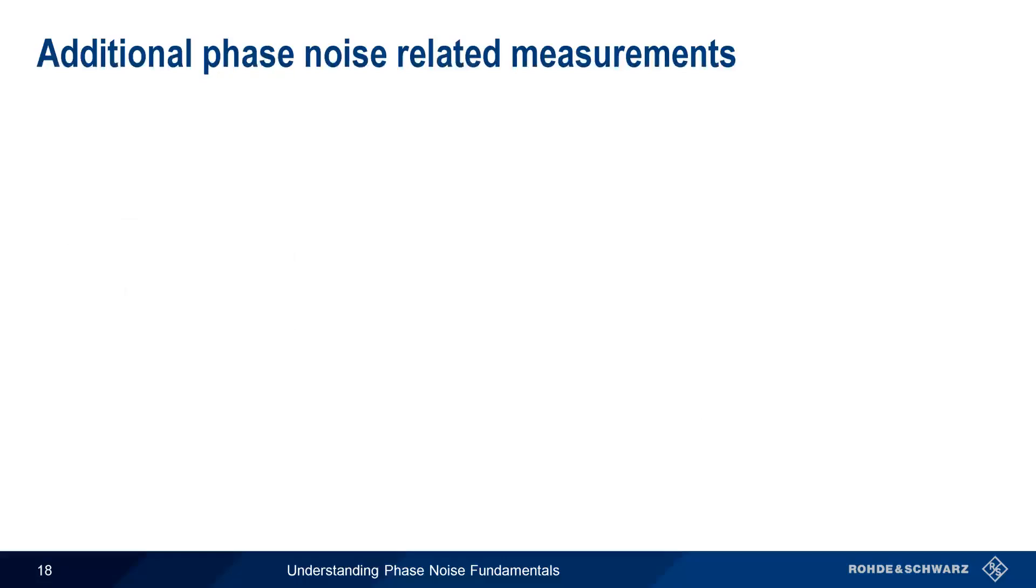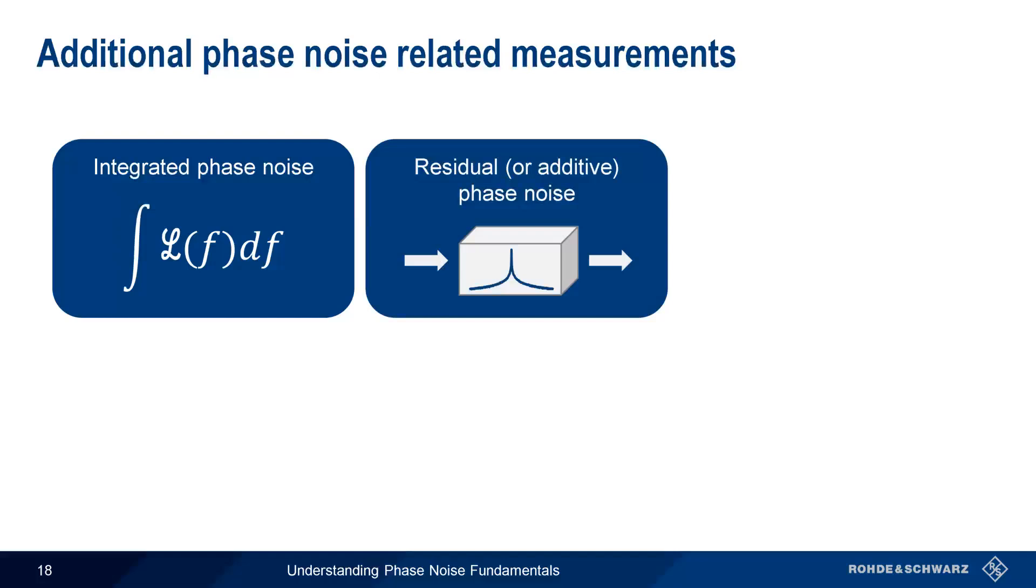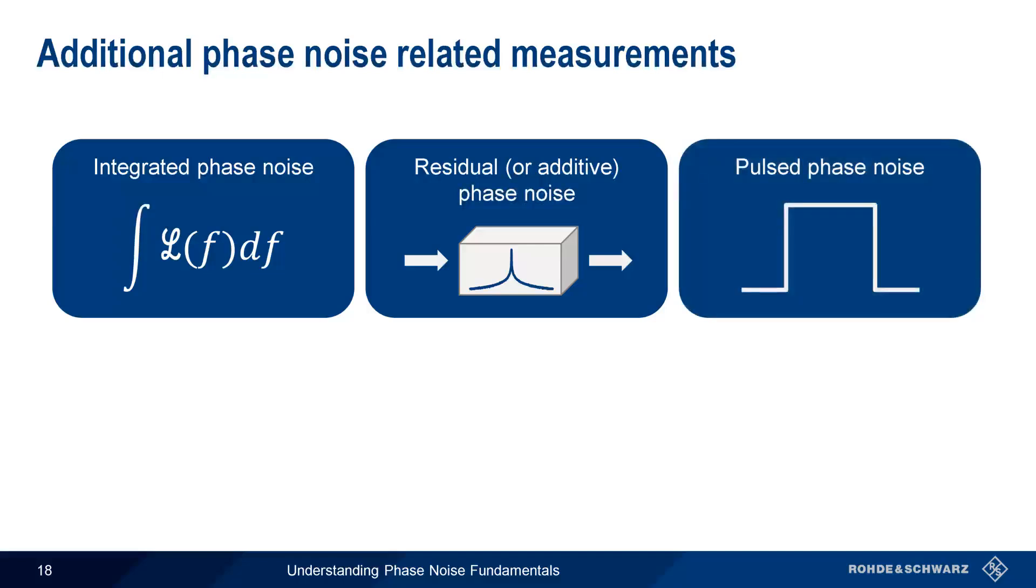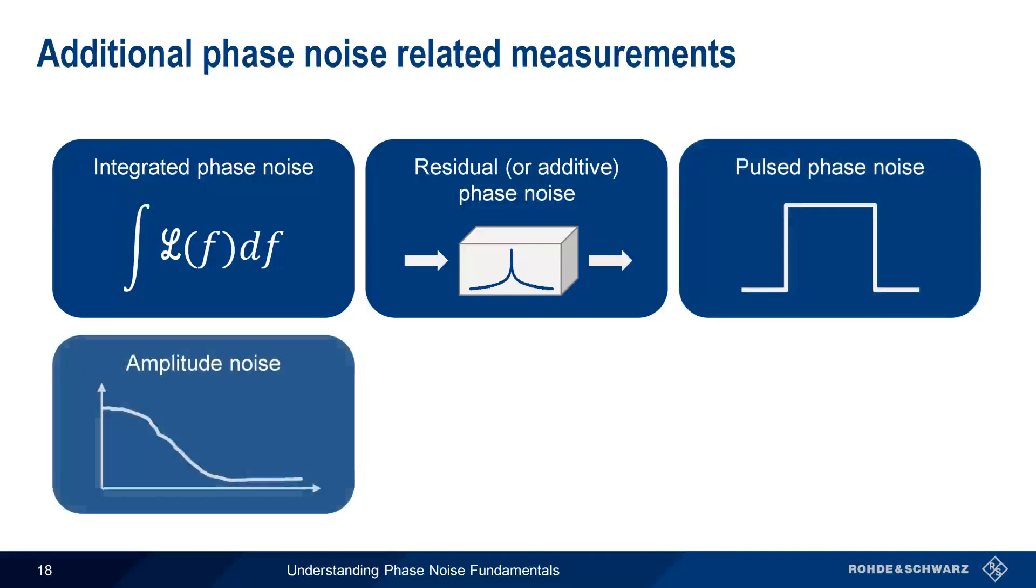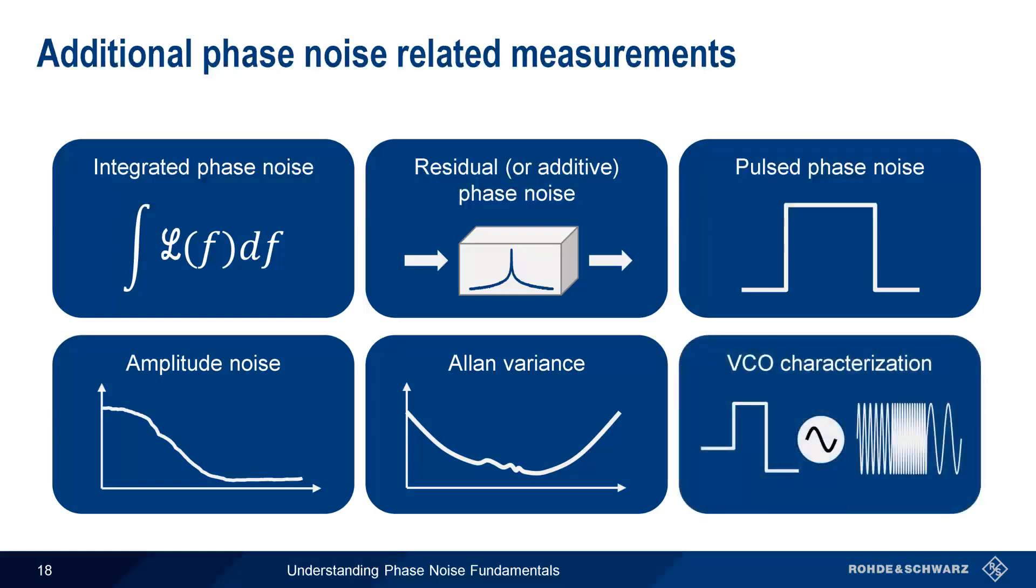In this presentation, we've covered the fundamentals of phase noise, but there are many other types of phase noise and phase noise-related measurements. Integrated phase noise measurements involve integrating over some portion of the single-sideband phase noise curve. Residual or additive phase noise measurements are used to determine how much phase noise is added as a signal moves through a device. Measuring the phase noise of pulse signals, such as radar, presents special challenges, as does measuring amplitude noise separately from phase noise. Allen variance is a measure of long-term frequency stability. And finally, VCO characterization is used to determine additional key properties of voltage-controlled oscillators. We don't have time to go into these topics in this presentation, but you can find links to related content in the video description.